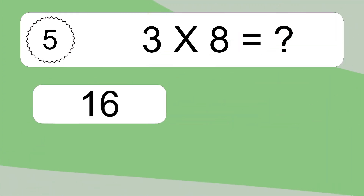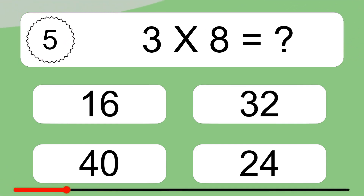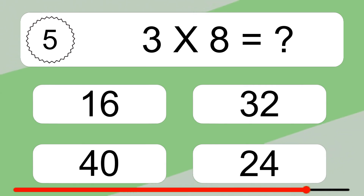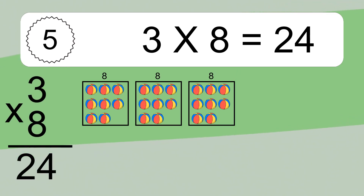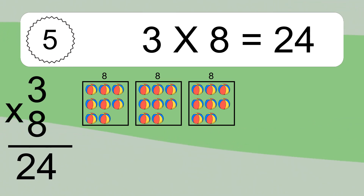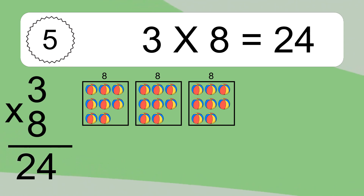3 times 8 equals what? 3 times 8 equals 24. We have 3 boxes, and each box has 8 colorful balls inside. If you count all the balls in all the boxes together, you will have 3 times 8 balls. This equals 24 balls.